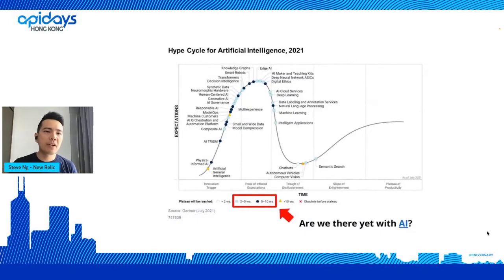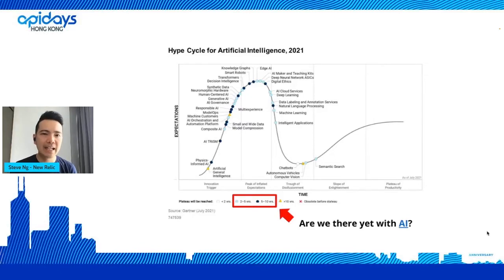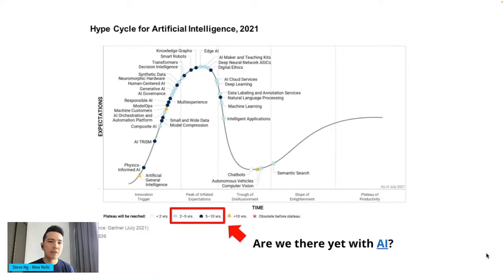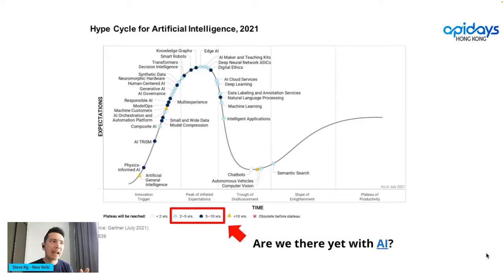When I approach the topic of AI, I'm very excited but also very skeptical, because as engineers we need to understand the reality of these technologies. What you see here is a Gartner hype curve that talks about different technology curves. AI and data was very exciting, but there are certain use cases where you need to be mindful of where it's right and where it's not. Most of the technology is around two to five years out, and OpenAI fits into natural language, data labeling, and AI cloud services.